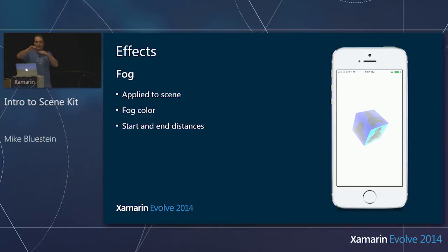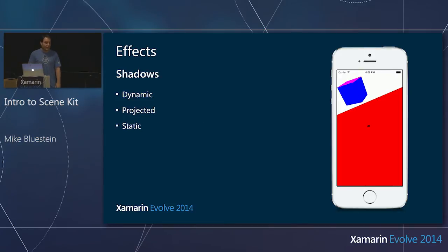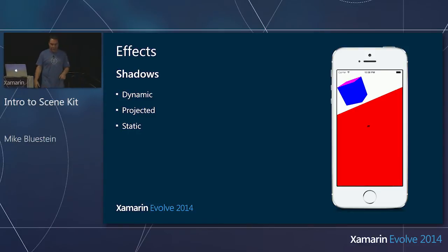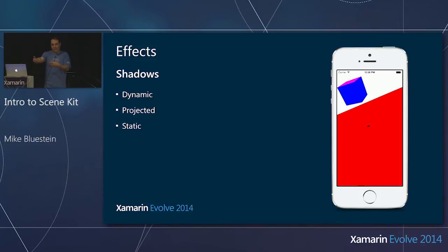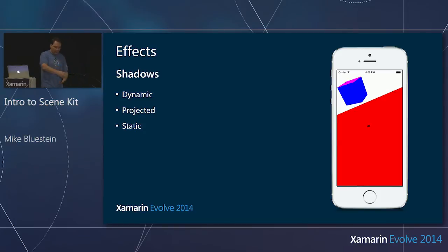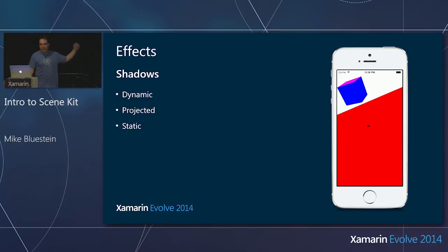Envision moving through a field where fog is in the background versus coming closer forward. Another effect you have is shadows. Dynamic shadows can get expensive — some bigger game frameworks find them expensive too. What people typically do in games is use a static shadow — a pre-calculated texture — so it doesn't update dynamically. But you can have fully dynamic shadows too; you just have to be careful with performance.